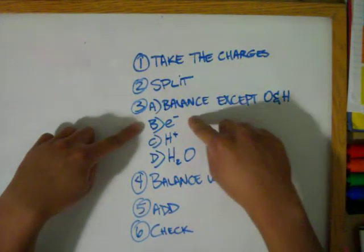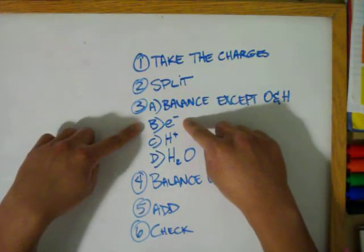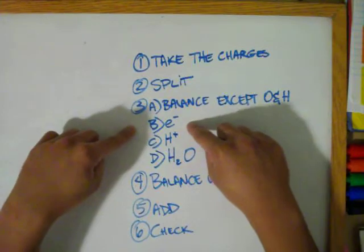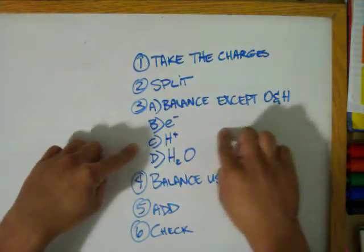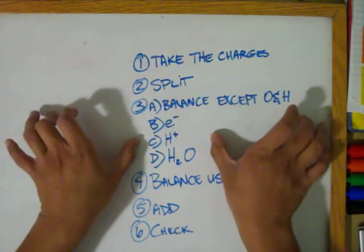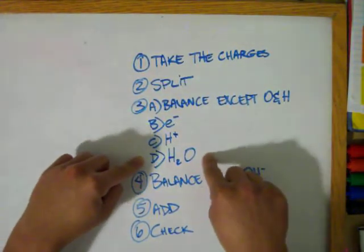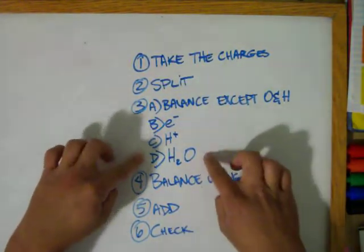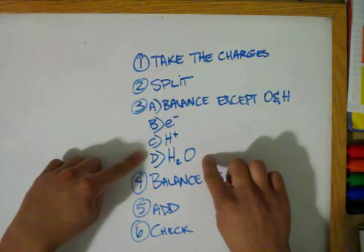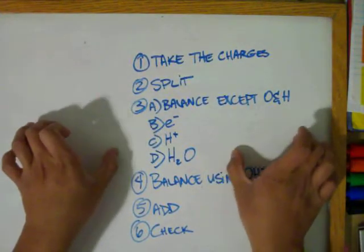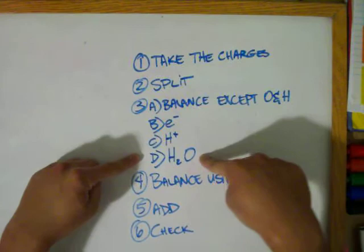Then you balance the charges of the elements by using electrons, and then you balance the charges of the whole sides using hydrogen ions. Then you add water to balance the hydrogens and the oxygens.